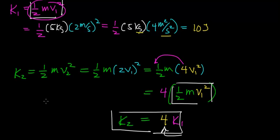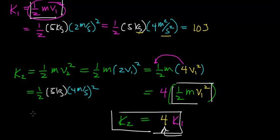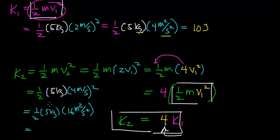Just to cement this idea a little further, let's work this out numerically. We said this will be one half the mass of the object, which was 5 kilograms, multiplied by the doubled velocity squared — which worked out to be 4 meters per second — and we square the entire term. We get one half times 5 kilograms times 4 meters per second squared, which is 16 meters squared per second squared. Multiplying 5 times 16 gives 80, and one half of 80 gives 40 joules.